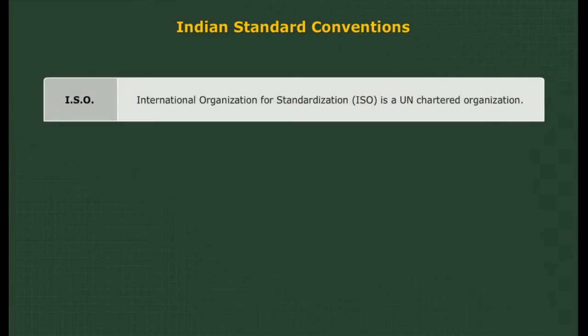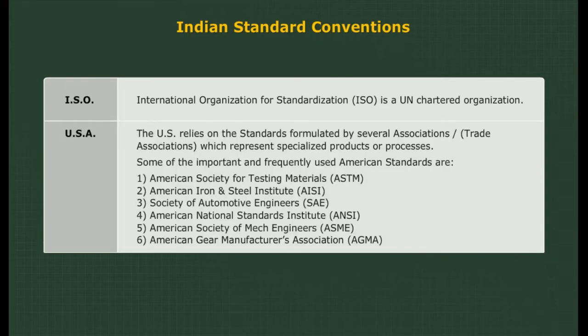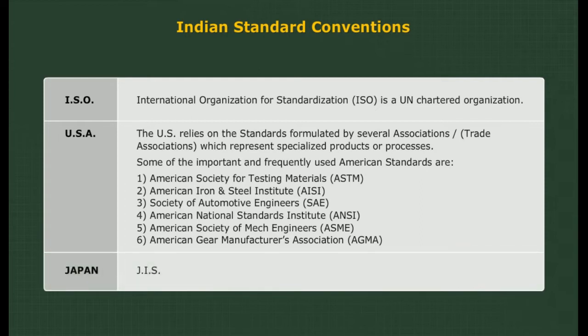ISO — International Organization for Standardization — is a UN chartered organization. The USA relies on standards formulated by several associations or trade associations which represent specialized products or processes. Some of the important and frequently used American standards are listed. Japan uses JIS standards.